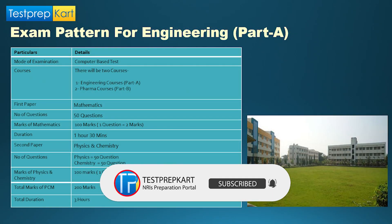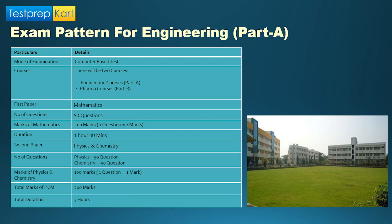MHT CET is generally conducted for two types of courses: first, engineering courses meaning BTech and B.Architecture streams, and second, pharma courses. The exam pattern is divided into two parts: Part A is for students who have PCM — Physics, Chemistry, and Math — in their Class 12th, and Part B is for those who have PCB — Physics, Chemistry, and Biology.